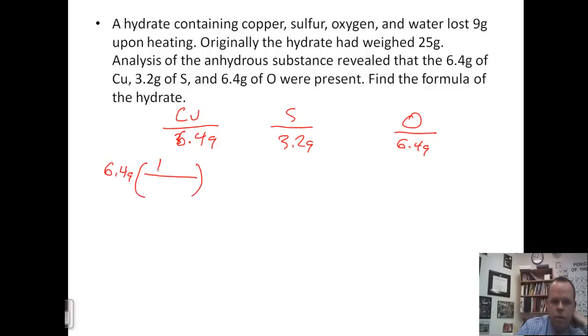So for copper, one mole over 63.55 grams, which gives us 0.10. 3.2 grams, one mole over 32.07 grams, which gives us 0.10. And 6.4 grams, one mole over 16.00 grams, and you get 0.40.